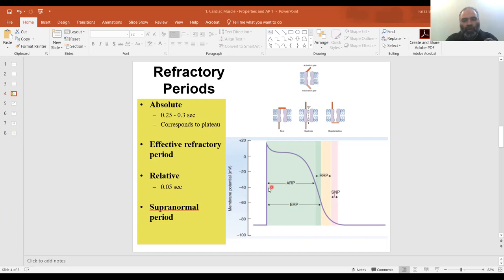So its value is 0.25 to 0.3 seconds and where is it? It is right here, absolute refractory period. This light blue line, let me clarify this to you, from here this whole thing here,